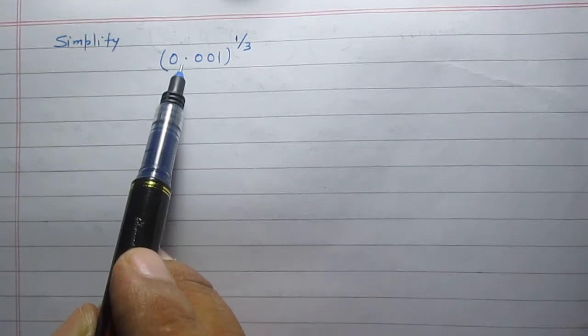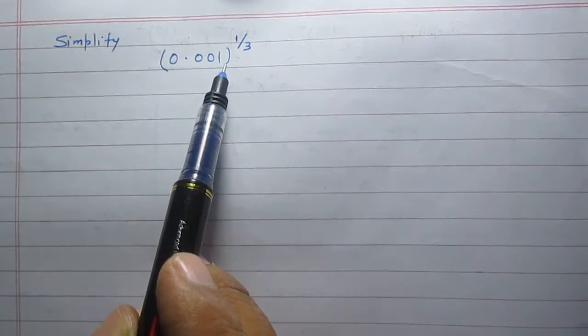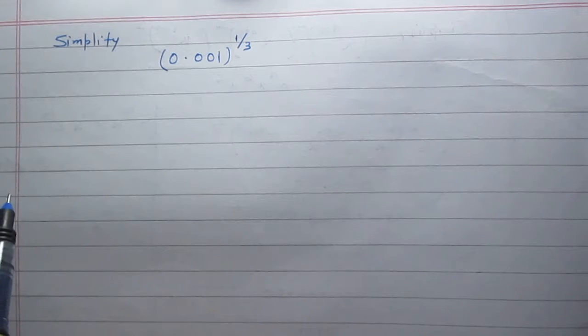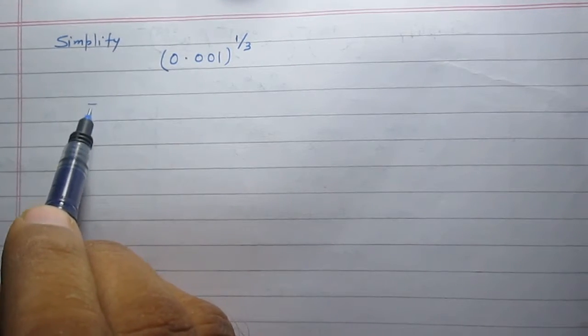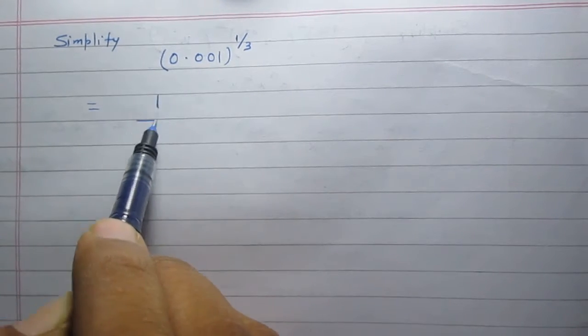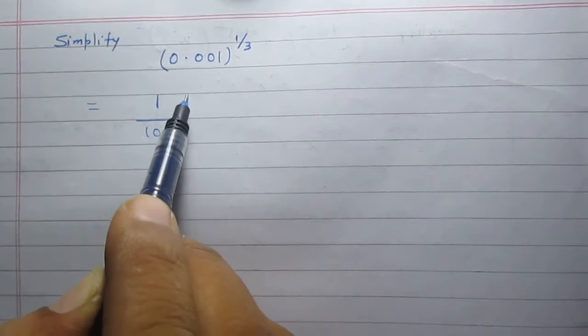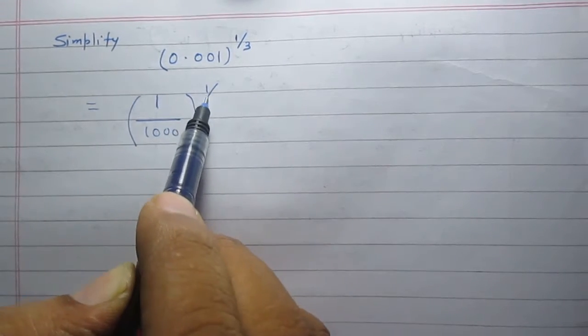Simplify 0.001 raised to the power 1 by 3. I can write it as 1 upon 1000 raised to the power 1 by 3.